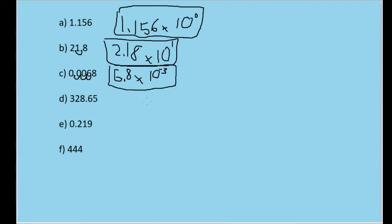For 328.65, we have to move the decimal place to the left two spaces, 1, 2. Following the method we've been using, this becomes 3.2865.